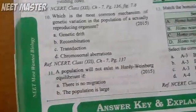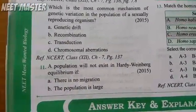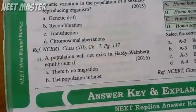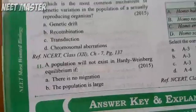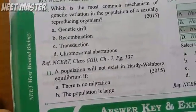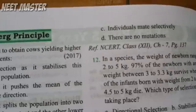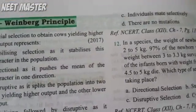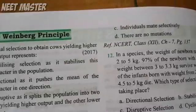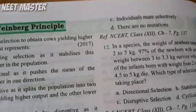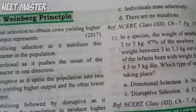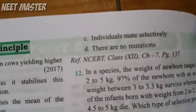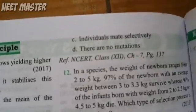Using option elimination: no migration — Hardy-Weinberg equilibrium allows no migration, so that is fine. Large population — Hardy-Weinberg requires a large population; genetic drift occurs in small populations. Individuals mate selectively — Hardy-Weinberg requires random mating, so selective mating would disturb equilibrium. That is the correct answer — the third option.